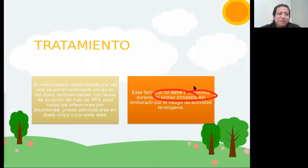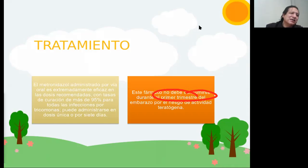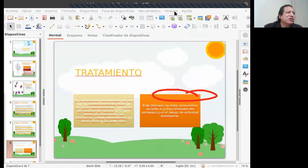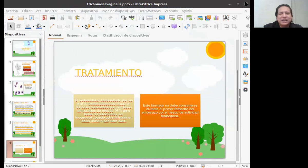Sin embargo, en una mujer que tiene una enfermedad de transmisión sexual, por seguridad, se puede preferir la cesárea. Sin embargo, en este caso no sería necesario. Eso sería entonces en cuanto a lo que es la Trichomonas vaginalis. No sé si tienen preguntas — como no veo que escriben en el chat, creo que no hay preguntas. De todas maneras, no sean tímidos, pueden escribirlo y yo les explico.